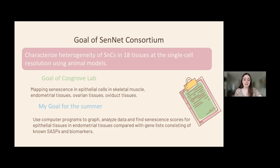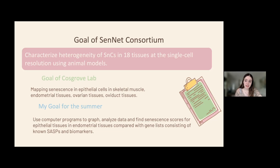The Cellular Senescence Network was established to characterize the heterogeneity of senescent cells in 18 tissues at the single-cell resolution using animal models at various stages of health across the body and across the lifespan.